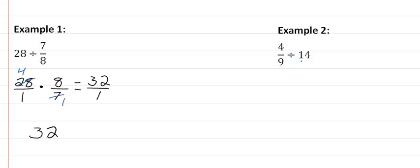In our second example, I notice that we have a whole number here. I want to write that over 1. The first number stays the same. It's 4 ninths times the reciprocal of our second number, which would be 1 over 14.